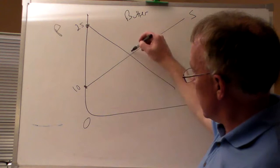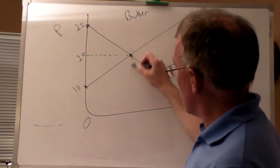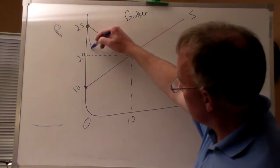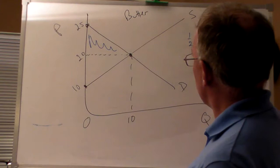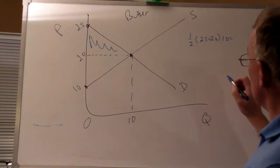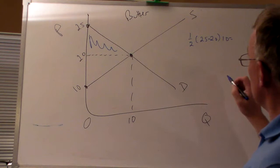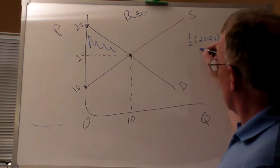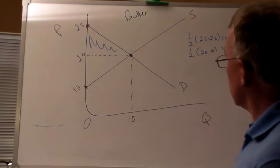Let's assume that the equilibrium price is $20 a pound and the equilibrium quantity is 10 pounds of butter. With this, we can calculate consumer surplus — shaded in blue. The consumer surplus would be half of (25 minus 20) times 10, which is the height times the base of the triangle. So this would be 5 times 5, which is 25. The producer surplus would be from $10 to $20, so half of (20 minus 10) times 10, which equals 50.